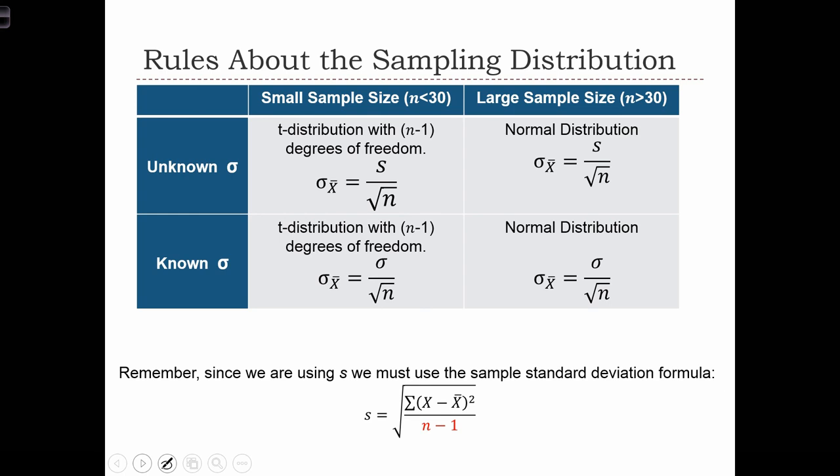We can assume that the sampling distribution is normally distributed whenever we have a large sample, a sample size greater than 30.